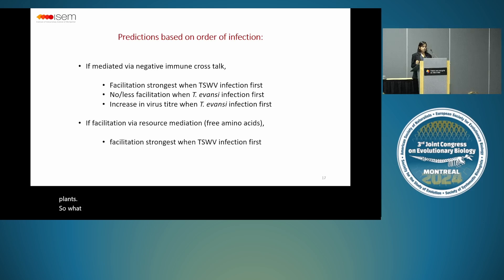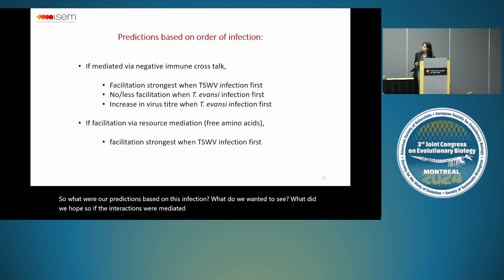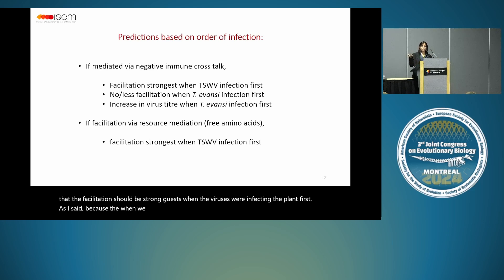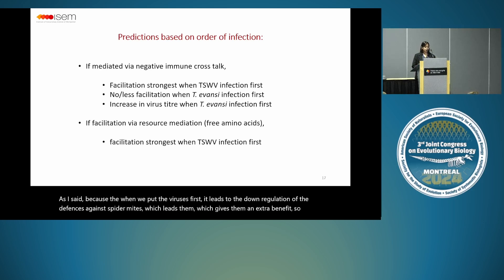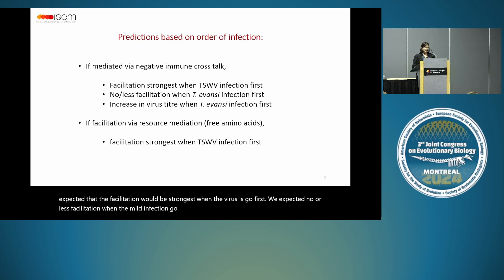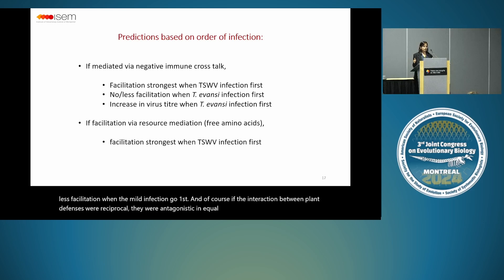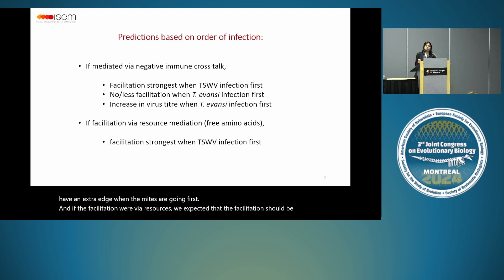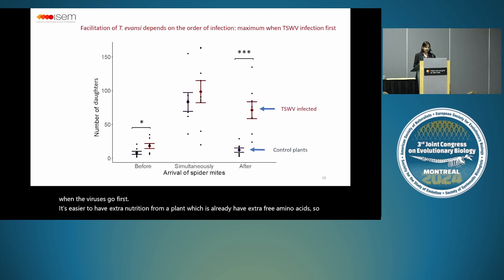What were our predictions? If interactions were mediated via negative immune crosstalk, we thought facilitation should be strongest when viruses infect the plant first — because when we put viruses first, it leads to downregulation of defenses against spider mites, giving them an extra benefit. So we expected facilitation to be strongest when viruses go first, and no or less facilitation when mite infection goes first. If the plant defense interactions were reciprocal and antagonistic in equal amounts, then viruses should have an extra edge when mites go first. If facilitation were via resources, we expected facilitation to be strongest when viruses go first, since it's easier to have extra nutrition from a plant that already has extra free amino acids.